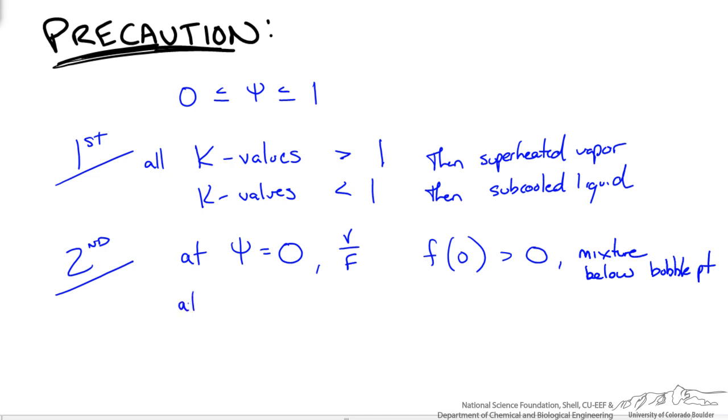The second check is at the dew point. This is going to be where we have very little liquid or a lot of vapor. So the function of 1, if that is less than 0, then we are above our dew point. Again we are not going to have vapor liquid equilibrium. So we need to have k values that are both above and below 1, and then we need to make sure that our function of psi falls in between those two conditions. Now to see an example of this, check our other screencast on using this technique to solve for multiple component flash tank separation.